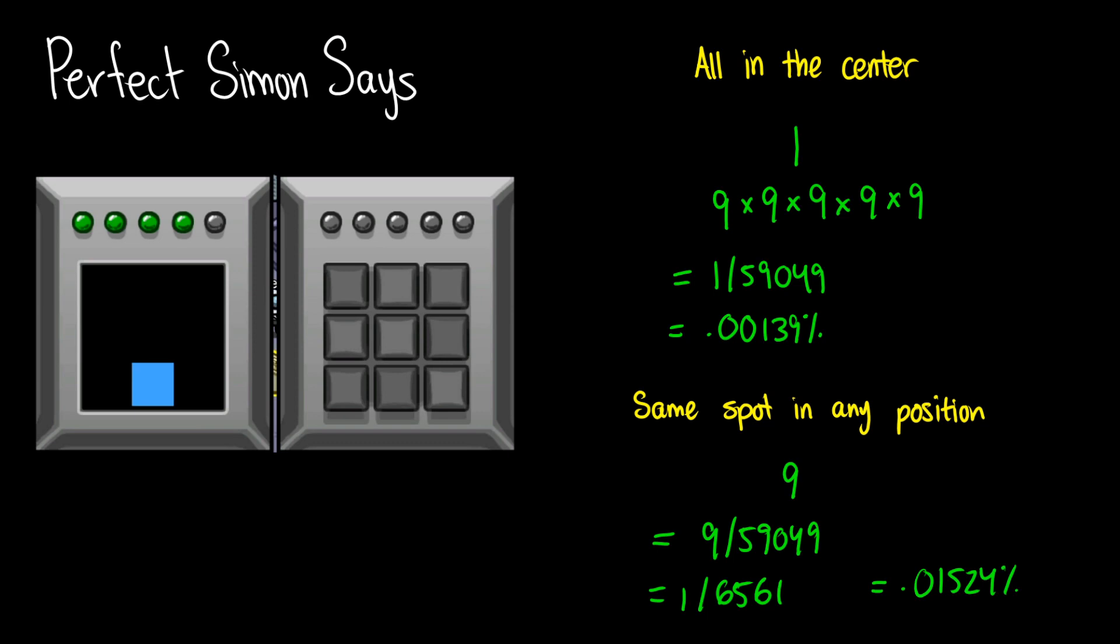So my advice to you is when you're doing Simon Says in Specimen on the Polus map, make sure you bring a friend who you know is safe.